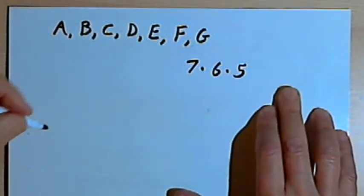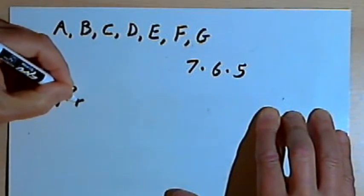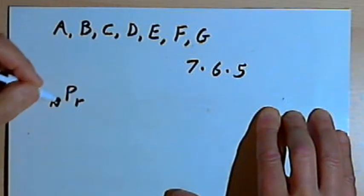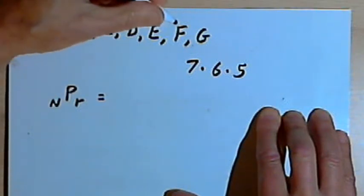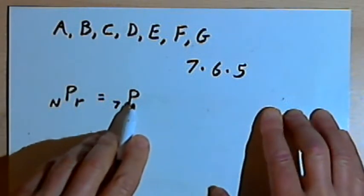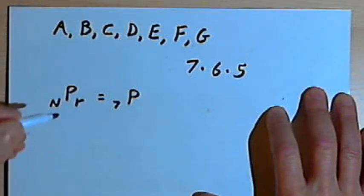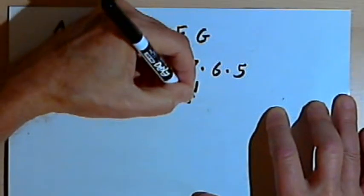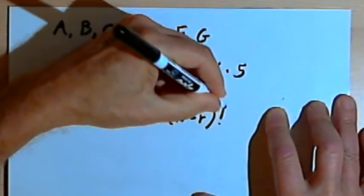There's a notation we can use for this. The notation is a subscript N and then a capital P and a subscript R. This is read usually as NPR or N permute R. Let's explain what that means and I'll tell you what the formula is. So the N is the total number of objects. So in our case, N would be seven. The P is for permute because we're doing permutations. And the R is going to be how many of those objects we're taking. So in our case, we're just taking three objects.